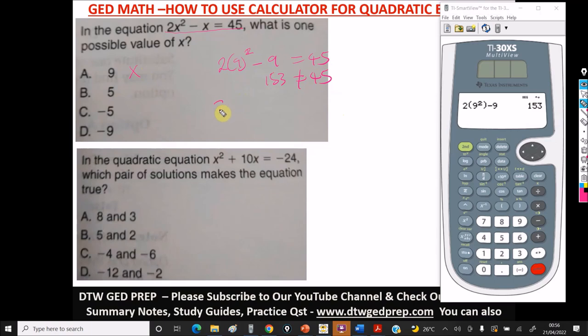Let's try 5. So we have 2 times the square of 5 minus 5. Remember, using your calculator, always clear before you start another operation.